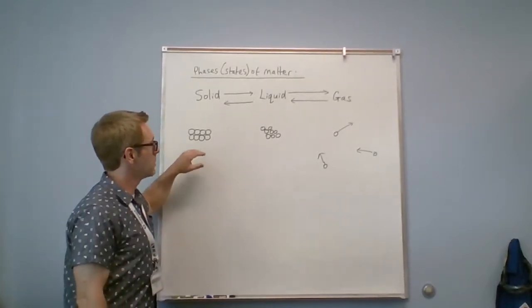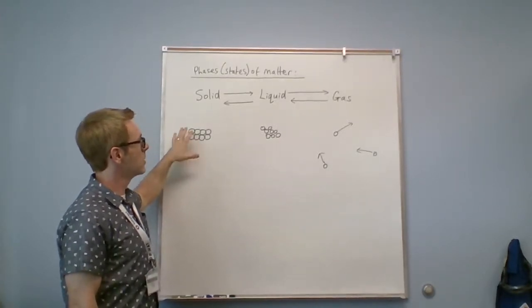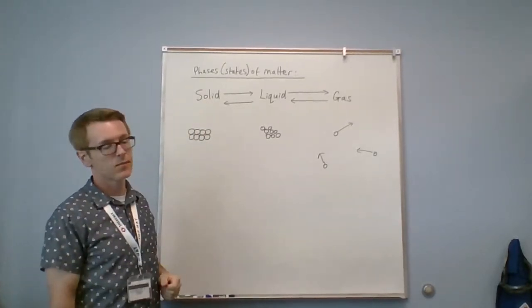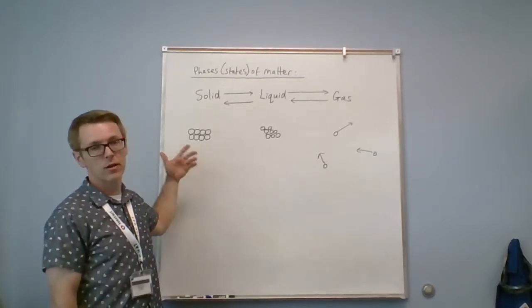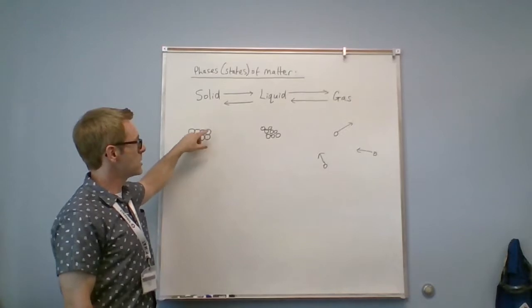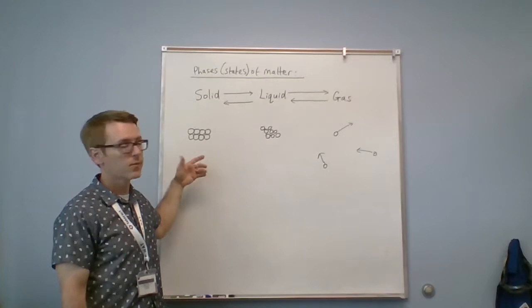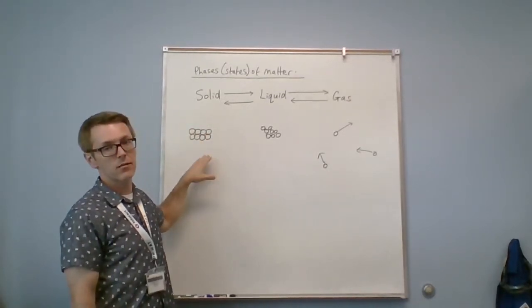What this would look like at the molecular level is if you consider that these spheres represent whatever solid this is. It could be a molecule of water, it could be an atom. But in a solid, they're all arranged in some kind of order. Now the exact nature of the order can vary, but they're arranged in some kind of order.